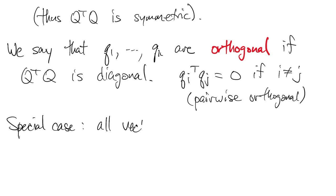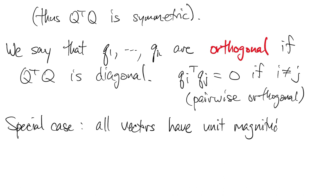We can take this a step further with a special case. If all these vectors have unit magnitude, then one is equal to the norm, so that doesn't change if we square it. So that means qi transpose qi is equal to one for all i.